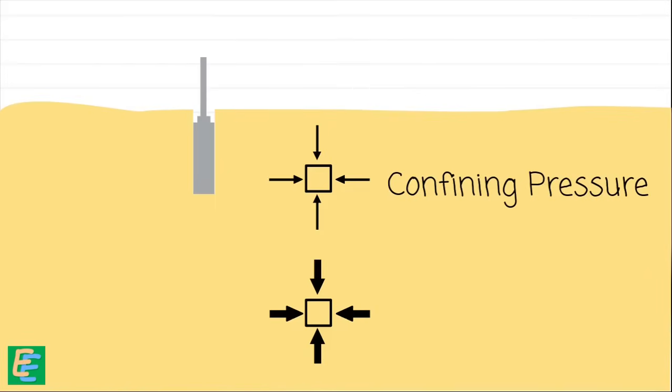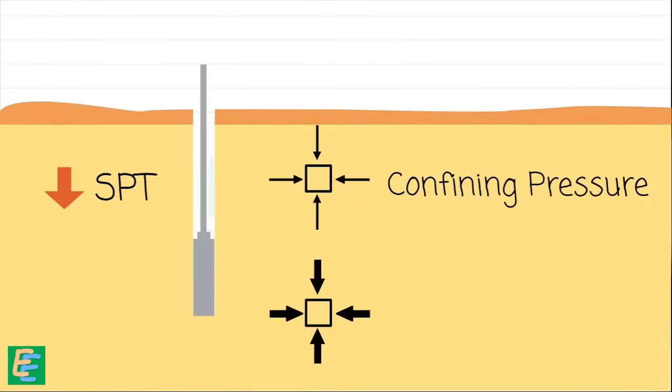At shallow depths where pressure from all around soil is less, we can easily push the sampler into the soil. This results in a lower SPT number. But as we go deeper, the soil gets burdened by its own weight and confining pressure increases. The sampler takes more blows to penetrate into the soil. This way we observe higher value of SPT number for the same soil at a deeper depth than at a shallow depth.